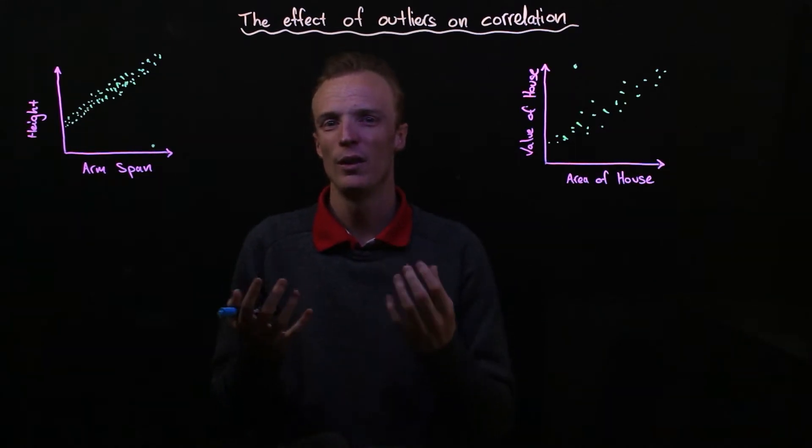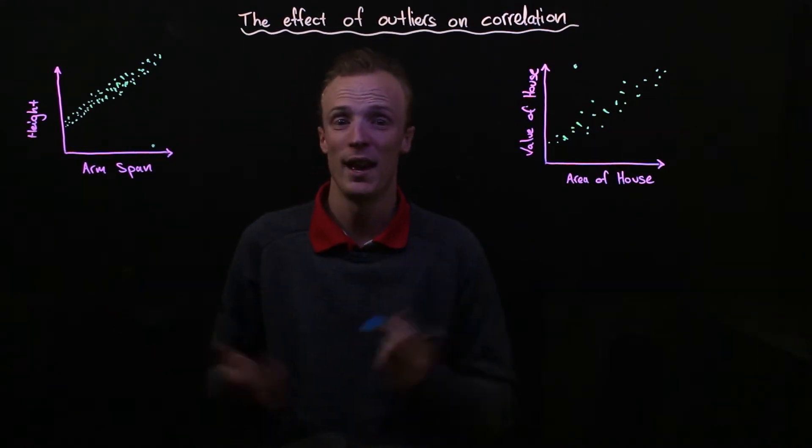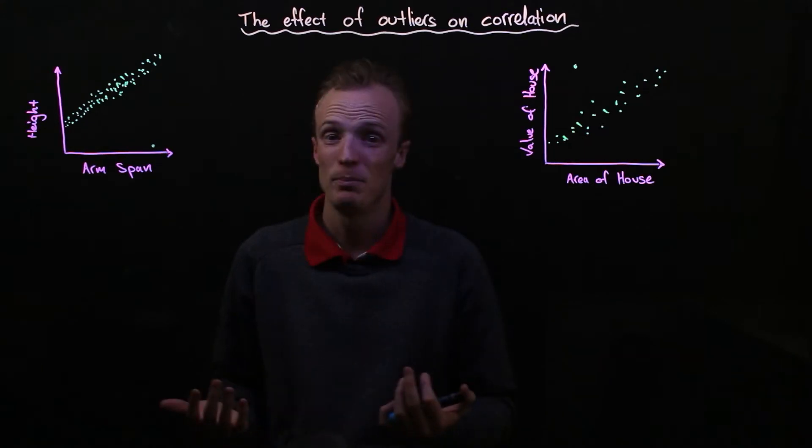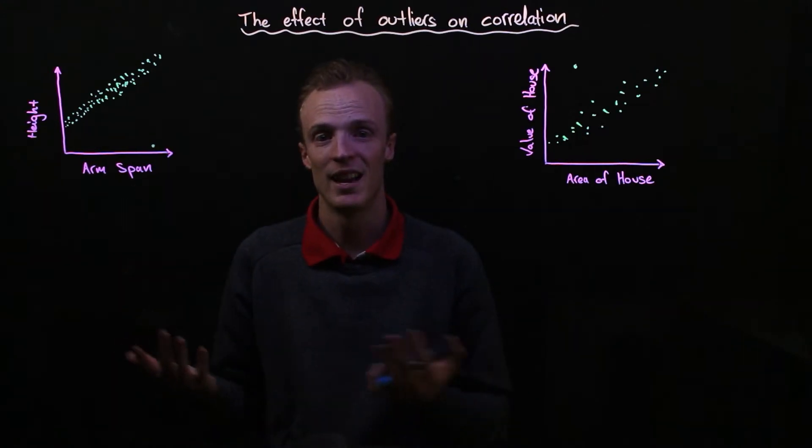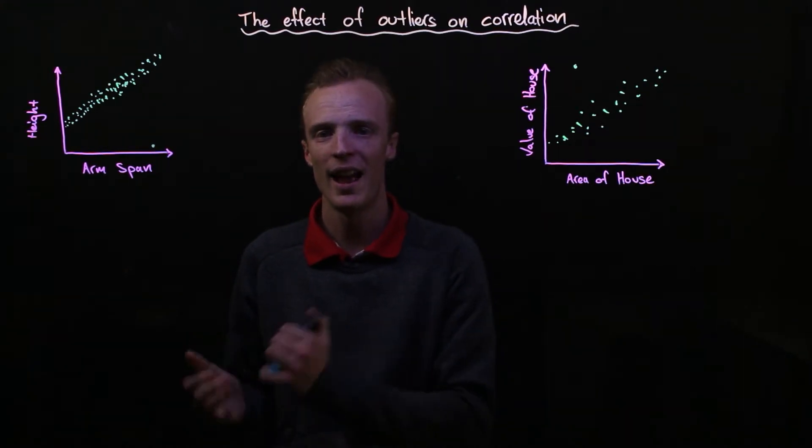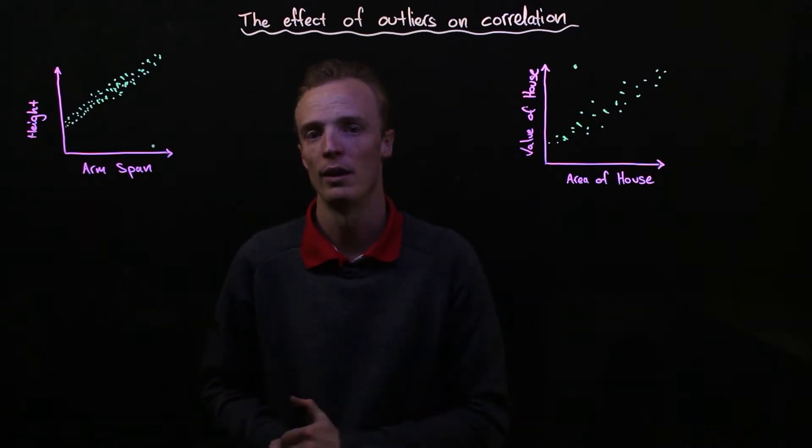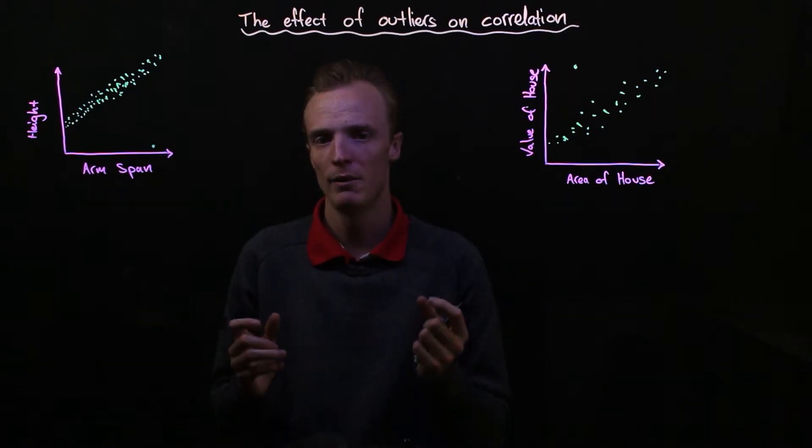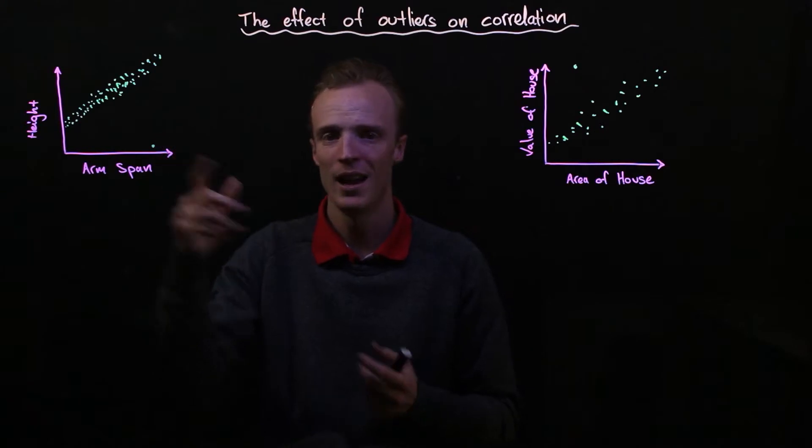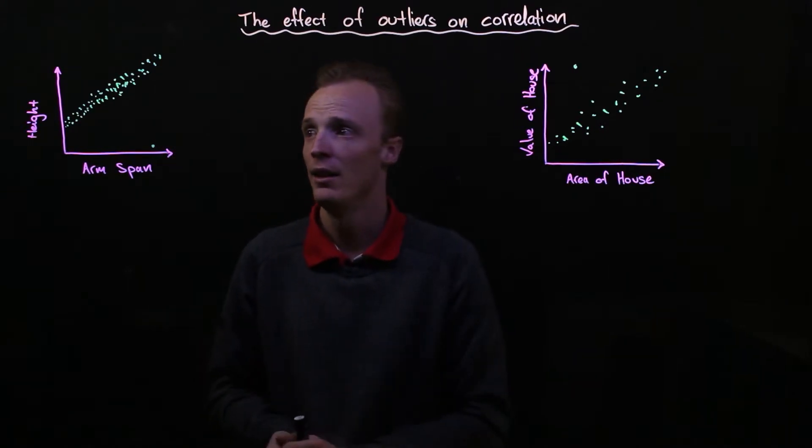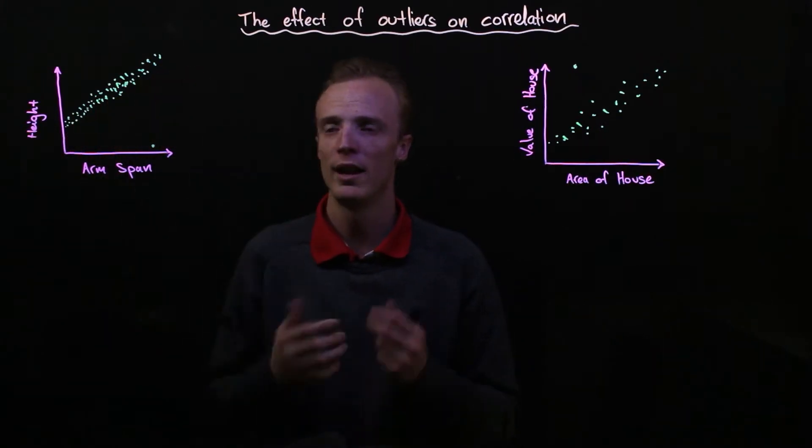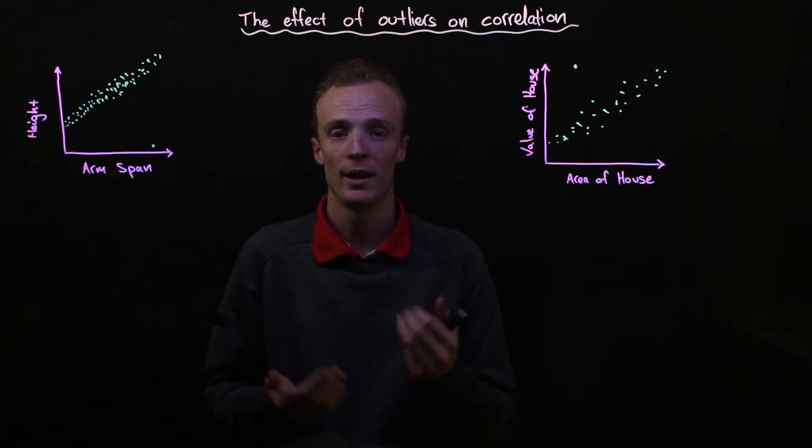So there are times that we've got to look at this and use our head a bit and go, well, this is probably an error in data collection rather than an accurate genuine data point. And we would use that reasoning to remove or discard this point from our data, so we've got a stronger correlation when we're starting to do our calculations.